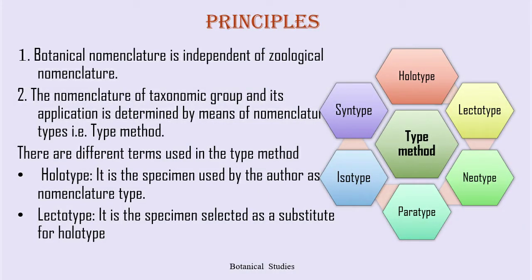Principles of ICBN: Botanical nomenclature is independent of zoological nomenclature. The nomenclature of a taxonomic group and its application is determined by means of nomenclature type, i.e., the type method. There are different terms used in the type method, beginning with Holotype.